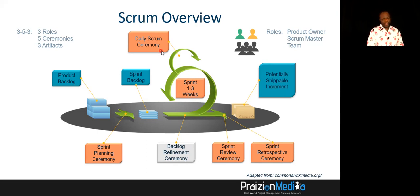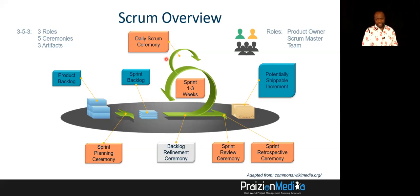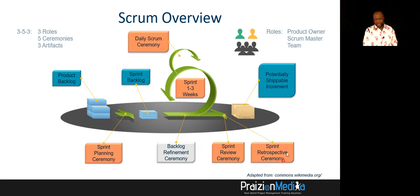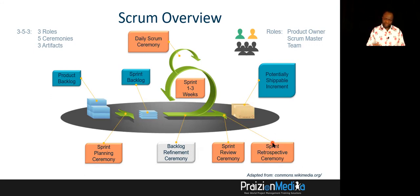We have the daily scrum, which is a daily standup where we talk about impediments, problems, blockers — what we've done to advance the sprint goal previously, what we're going to do to advance the sprint goal today, and whatever impediments. We also have backlog refinement — it's not a formal ceremony, but it should be happening at some point within the sprint. We have a sprint review where the customer takes a look at the PSI, the potentially shippable increment, and they comment and demo it.